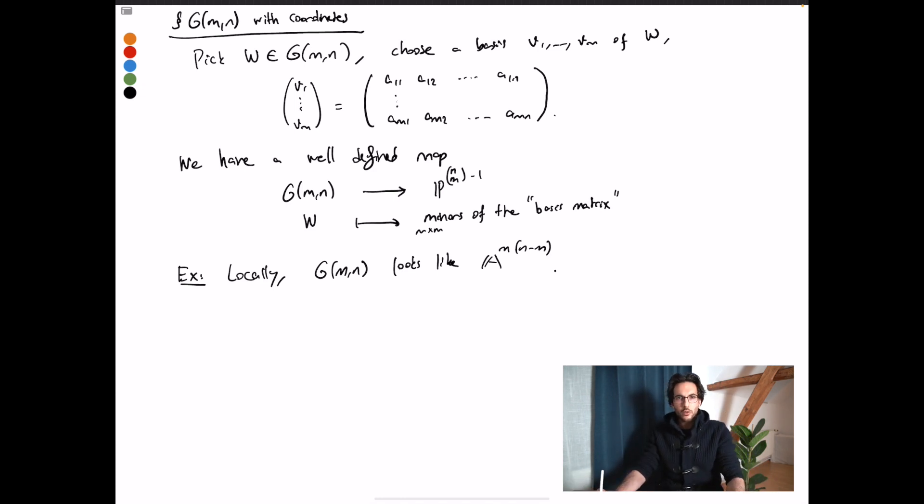The first exercise is to show that locally I can invert one of the minors. Therefore, I can assume this minor or the matrix representing this minor is just the identity. For example, take the first m by m block, make it the identity.